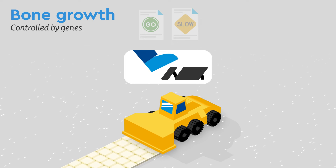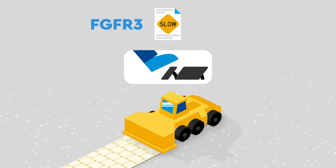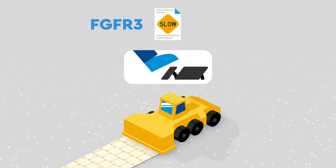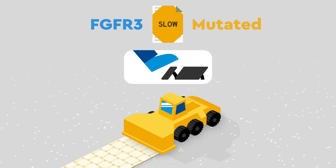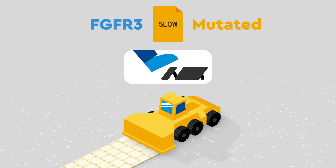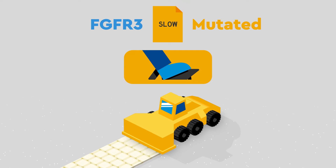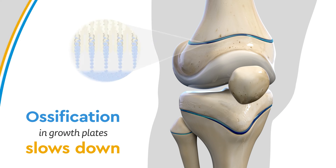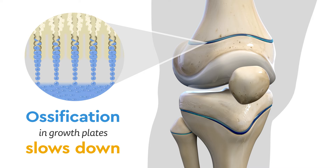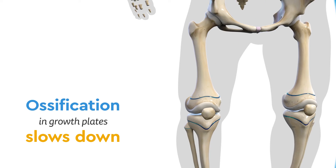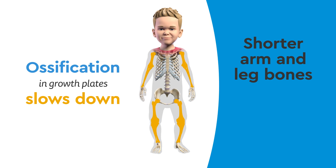One gene that slows it down is called FGFR3. In achondroplasia, however, the FGFR3 gene becomes changed or mutated, causing it to brake harder than it should. This causes fewer cartilage cells to divide in the growth plates, which slows ossification down, resulting in shorter arm and leg bones and shorter stature.